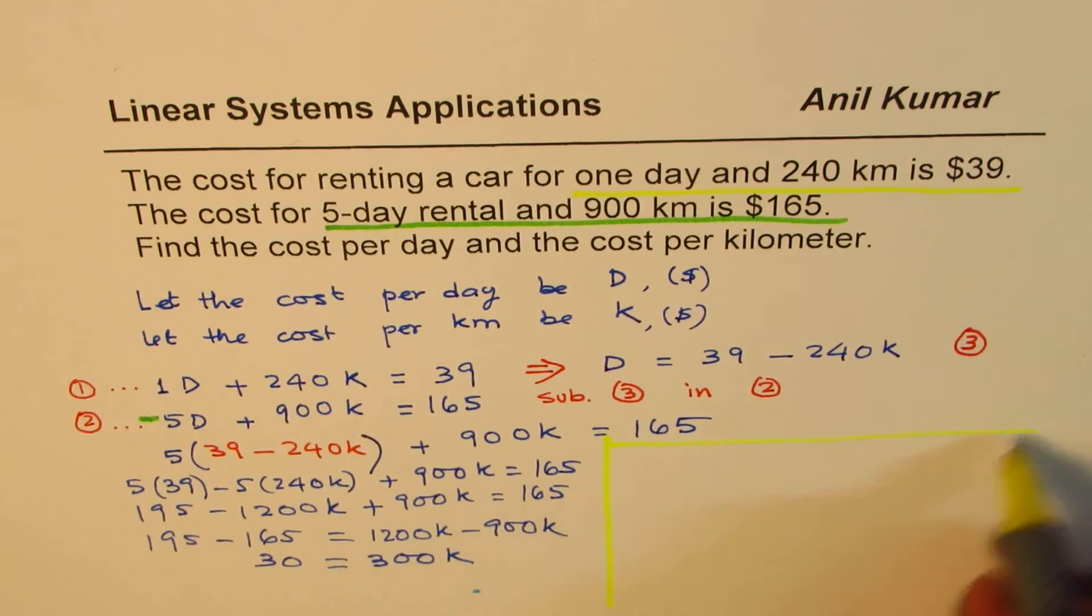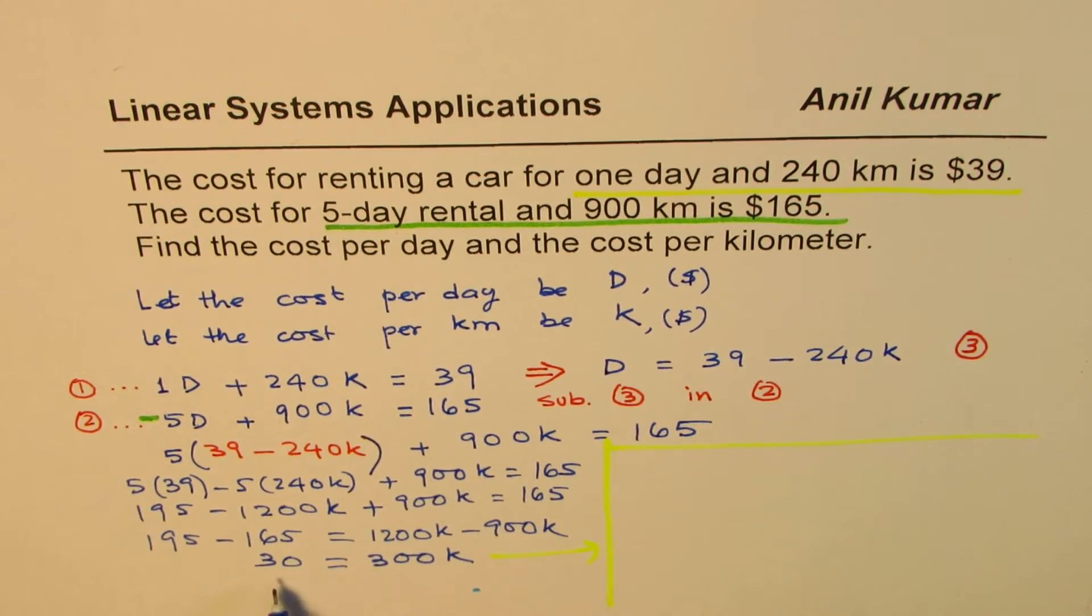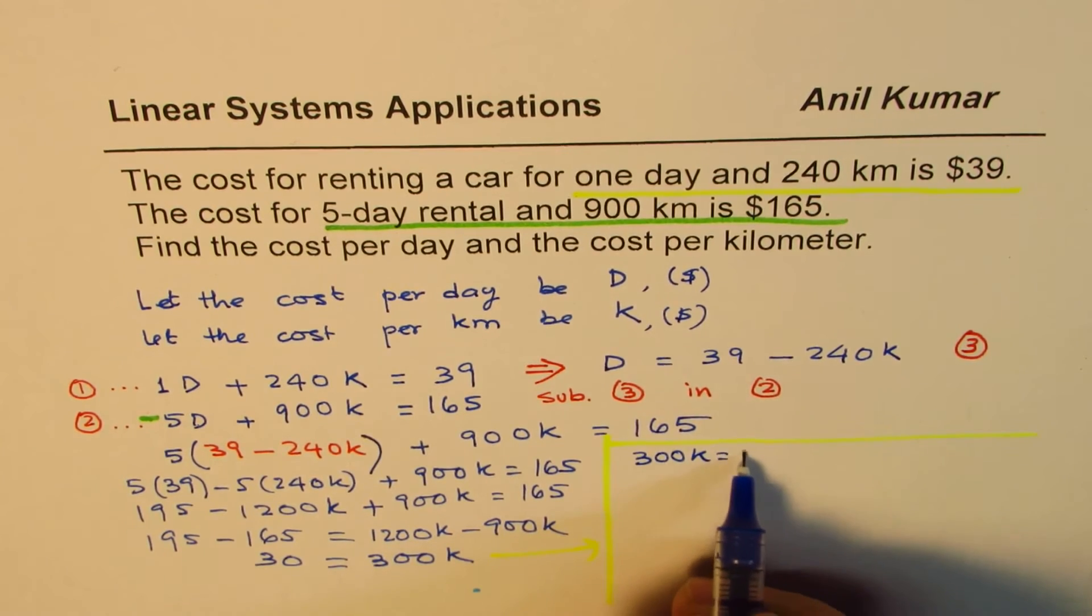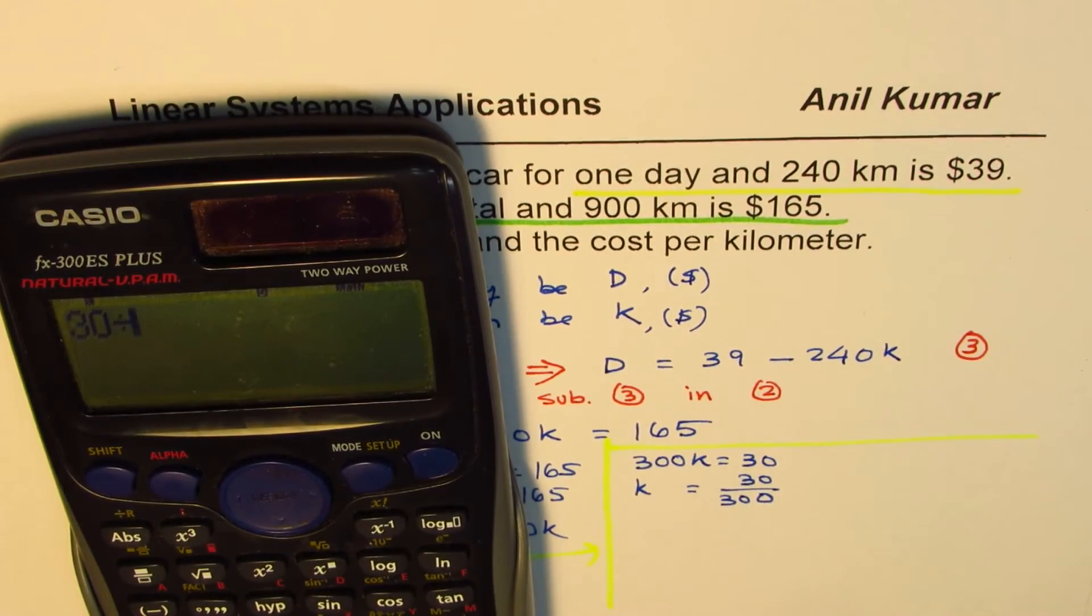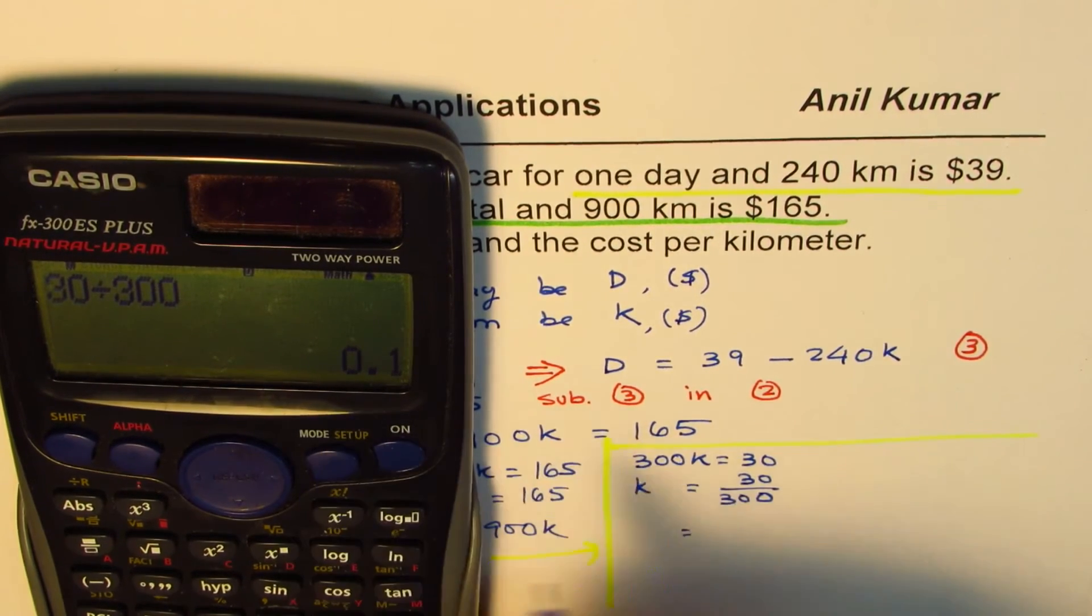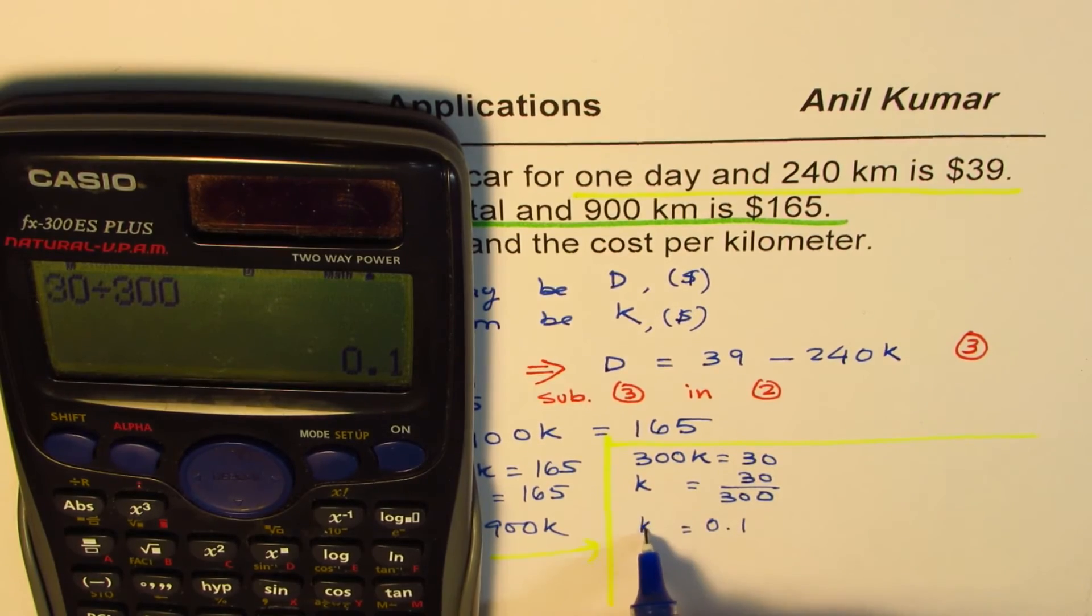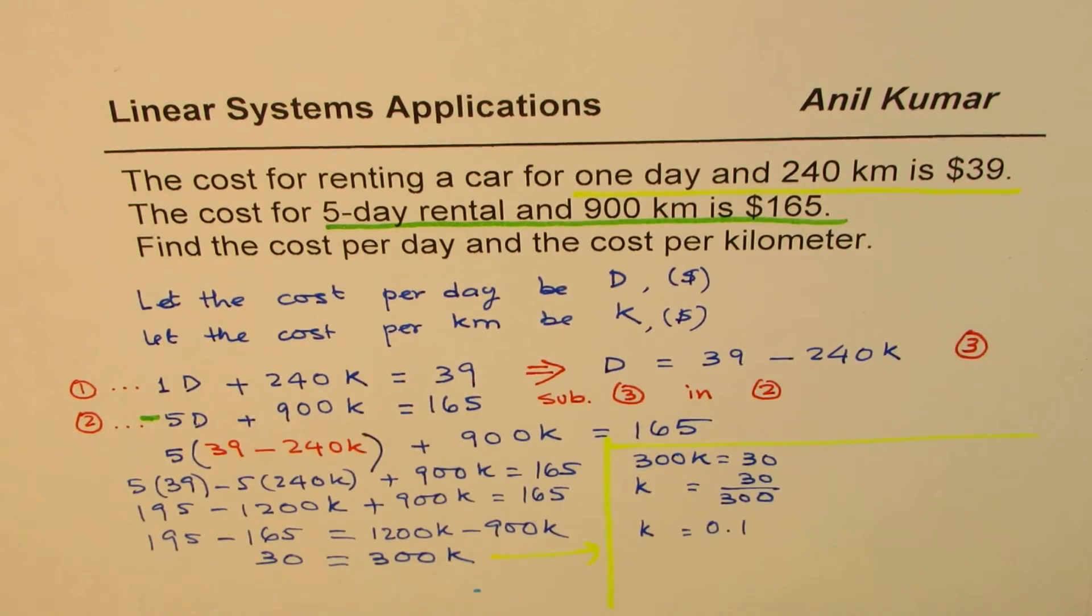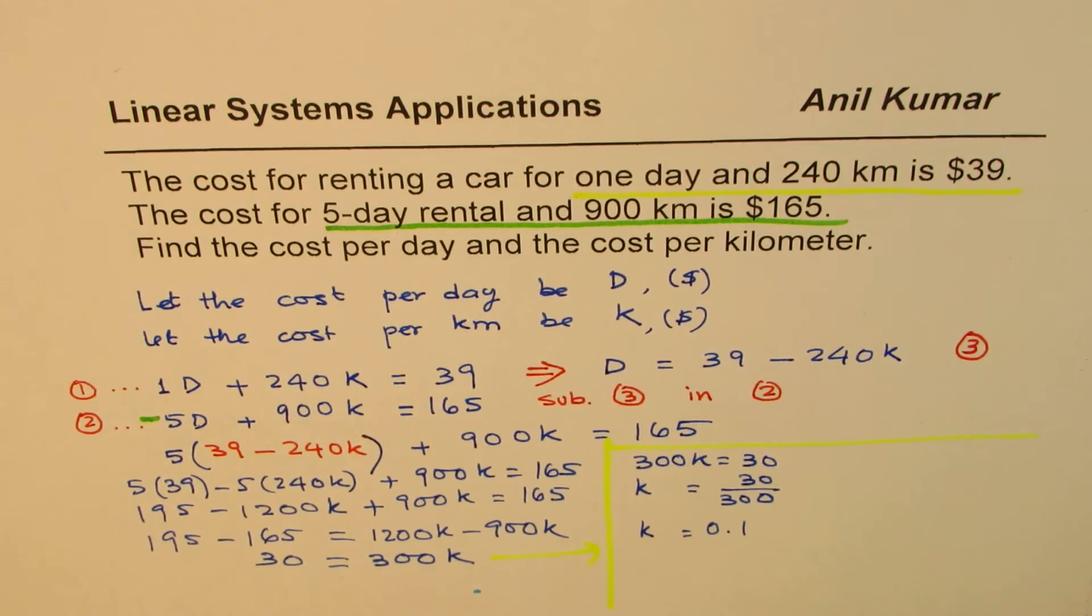We further take from here to this side. So what we have here is 300K equals to 30. When we have 300K equals to 30, K is equals to 30 divided by 300. And that is 0.1. It's good to use calculator. Simple calculations may yield results which may not be correct. So K is 0.1. Per kilometer, it is charging $0.1 or 10 cents per kilometer.